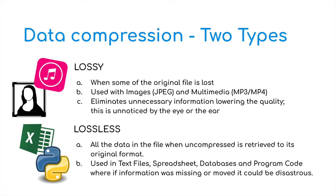Lossless compression works in a different way. All the data in the file is received in its original format when decompressed — none of the original information has been removed. It's used for text files, spreadsheets, databases, and program code, where any missing information could be disastrous. You couldn't send a spreadsheet that had missing results, missing columns, or data taken out. It must arrive to the receiver intact, and that's when we need lossless compression.